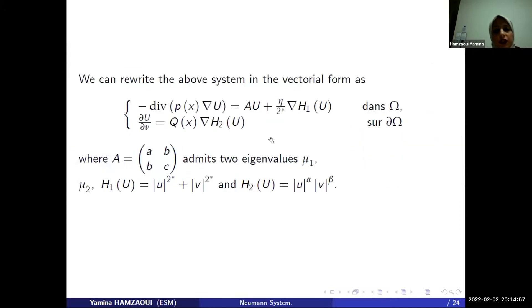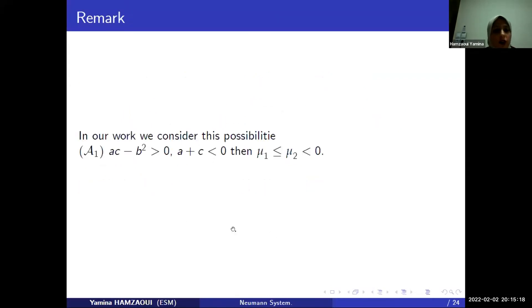We can rewrite the above system in the vectorial form, where A is a matrix characterized by the parameter A, B, C. This matrix admits two eigenvalues, mu1 and mu2, and H1 of U and H2 of U is equal to this equality.